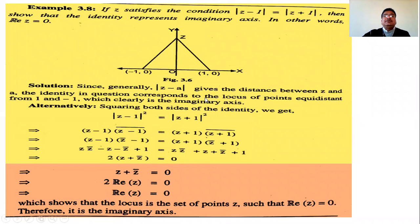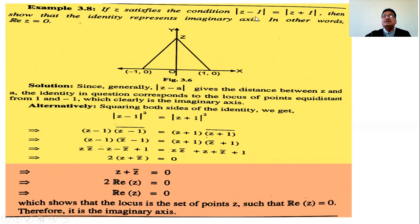Example: if Z satisfies the condition |Z - 1| = |Z + 1|, then show that this identity represents the imaginary axis, that is, the real part of Z is 0. Squaring both sides of the given condition, we need to show that the real part of Z is 0, meaning this identity represents the imaginary axis.